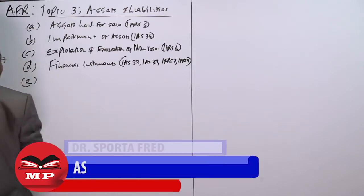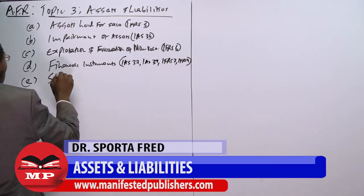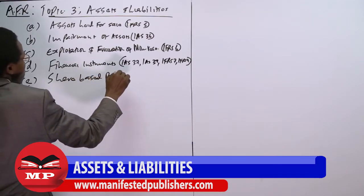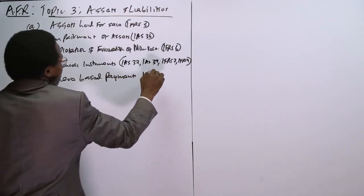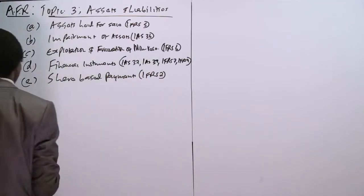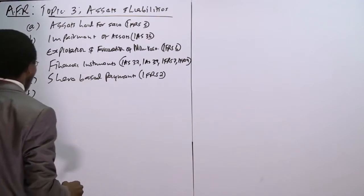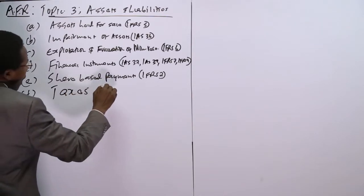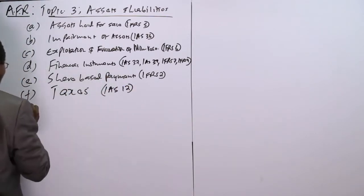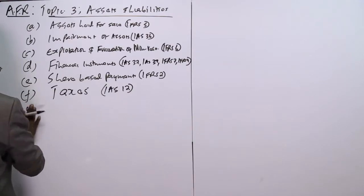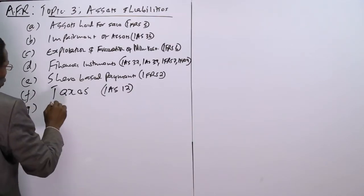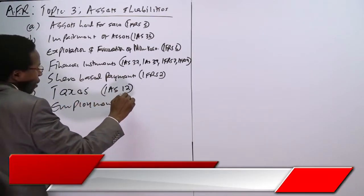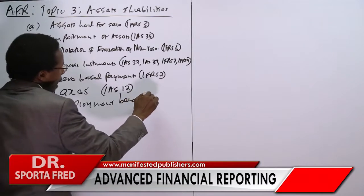We have share-based payments, IFRS 2. We have taxes, IAS 12. We have employment benefits, IAS 19.